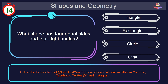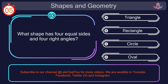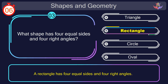Question number 3. What shape has 4 equal sides and 4 right angles? Your countdown started. Here we go. The correct answer is option B. Rectangle. A rectangle has 4 equal sides and 4 right angles.